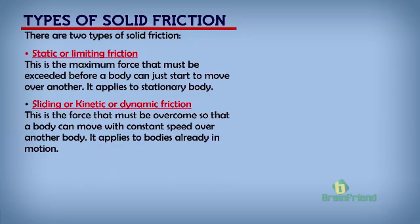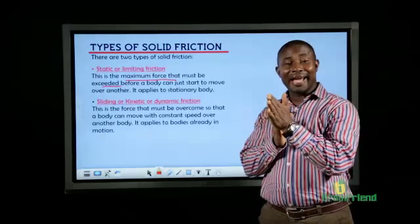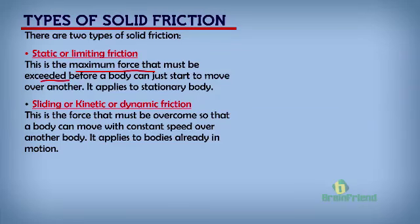There are basically two types of solid friction. We have static or limiting friction and we have sliding, kinetic, or dynamic friction. For static or limiting friction, there is a maximum force that must be exceeded before a body can just start to move over another body. For friction to take place, one body must slide against the other. So before the object will slide over the other one, there will be a need to overcome a maximum force — that is where limiting or static friction comes into application.